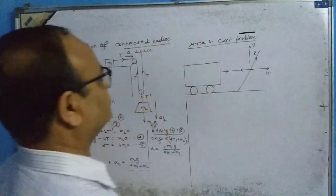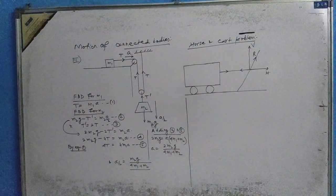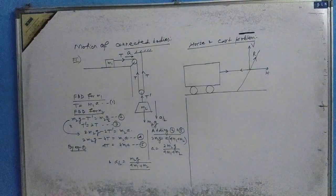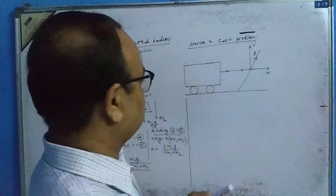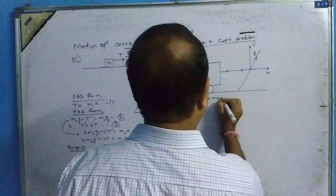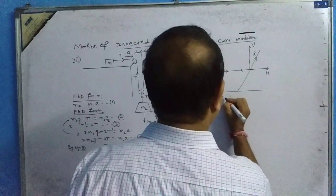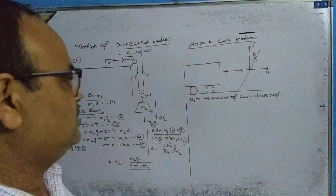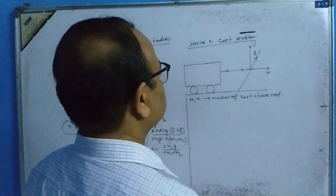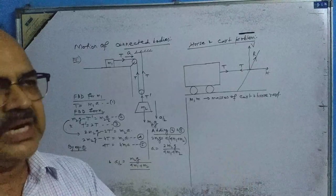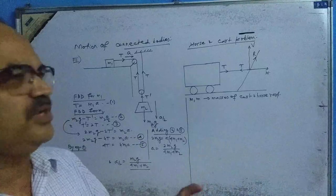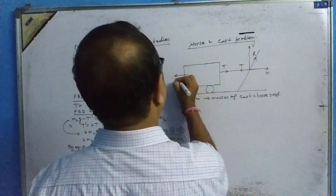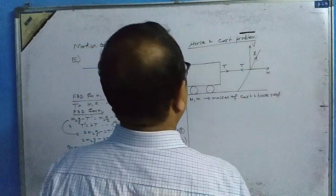Now I want to discuss a practical application of the free body diagram — the horse and cart problem. This is a very important problem. Here is a cart of mass capital M, and a horse of mass small m. The horse pulls the cart, so tension T acts on both — the cart pulls back with T and the horse pulls forward with T, since it is the same rope.